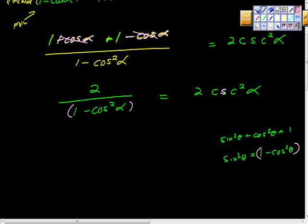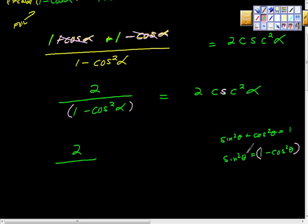I'm going to take the denominator one minus cosine squared theta and swap it out for its equivalent, sine squared alpha. So we now have two over sine squared alpha. Remember, we're trying to prove this equals two cosecant squared alpha — and alpha is just our angular variable.